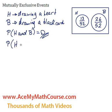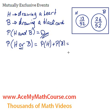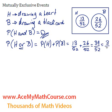What about the probability of H or B? What is the probability of getting either a heart or a black card? In this case, if and only if they're mutually exclusive events, we can calculate P(H) plus P(B), because there's no overlap between them. That'll be 13 out of 52 plus 26 out of 52. So the probability of drawing a heart or a black card will be 39 out of 52, which simplifies to 3 quarters.